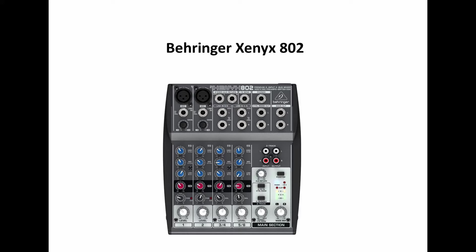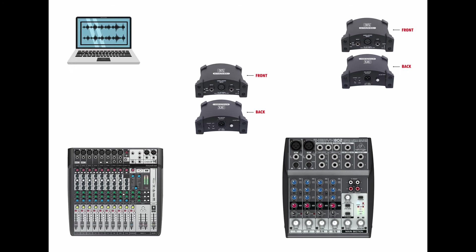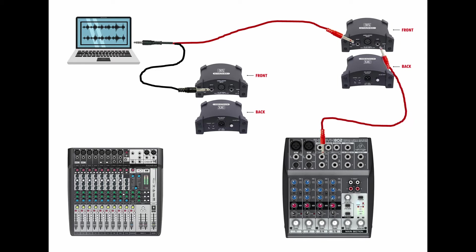For the second example, we're using the Behringer Xenix 802 - a small compact mixer. This is probably my favorite way to run backing tracks and click tracks for musicians. It's the most versatile and gives the musician more control over their mix without constantly asking the sound engineer. It's a similar setup to the first example but uses a couple of extra cables and one more DI box. Just like before, use the stereo splitter cable - the red cable with the click track goes to one DI box, and the other cable with the backing track goes into the second DI box.